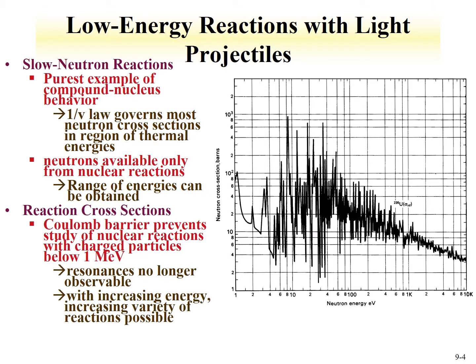An example of low energy reactions with light projectiles is slow neutron reactions — thermal neutron reactions. This is really the purest example of compound nucleus behavior. A 1/v law (one over the velocity, or the energy law) governs most neutron reaction cross-sections, so we tend to see a decrease in cross-section with an increase in neutron energy.